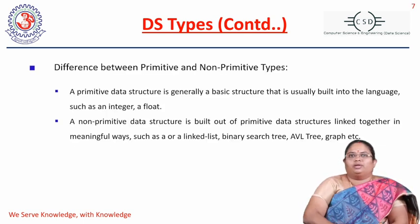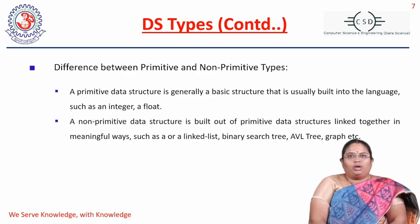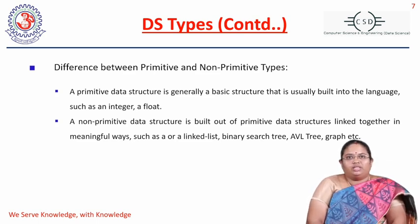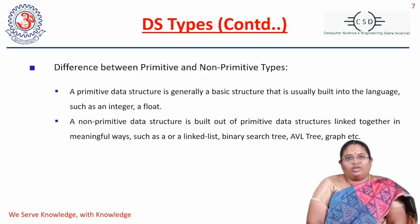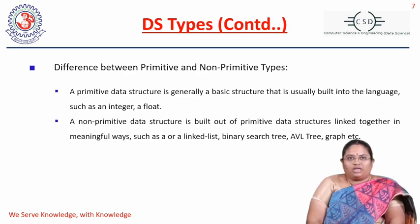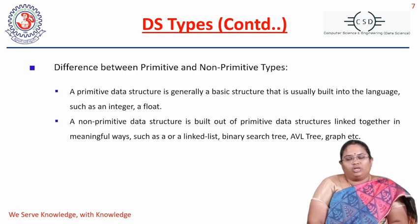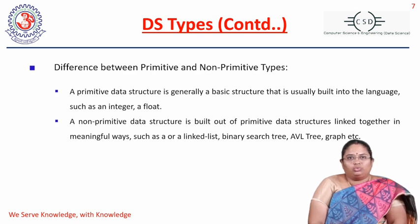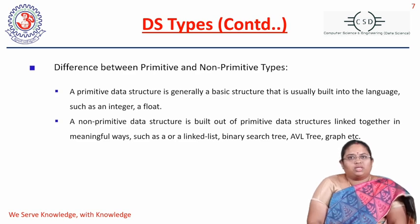Primitive types are usually built into the language — C, C++, Java, anything. According to the language, whatever data types it has are the primitive data structures. Non-primitive data structures are built from these primitive types linked together in meaningful ways; one or more primitive types are combined together to form non-primitive data structures.